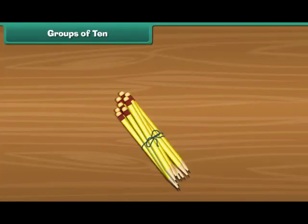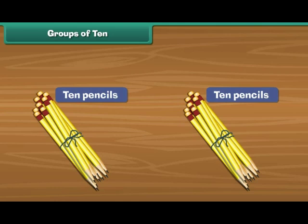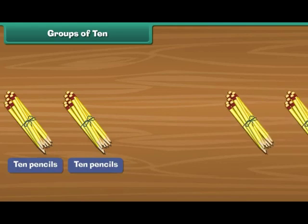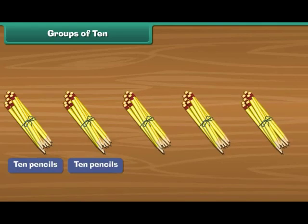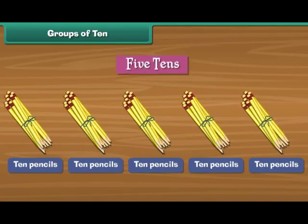Groups. Look at this bundle of pencils. There are 10 pencils in this bundle. A collection of 10 objects is called tens. Here is one more bundle. There are 10 pencils in it as well. Therefore, we have two tens. Here are some more bundles of pencils. Each bundle has 10 pencils. Let us count: 3, 4, 5. Therefore, we have five tens.